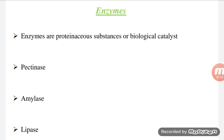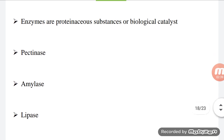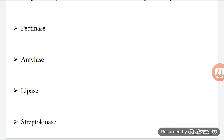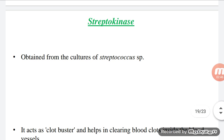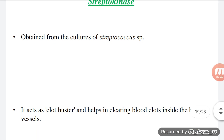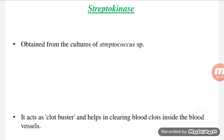Along with acids, microbes also produce certain enzymes, and these enzymes are protein in nature. The term 'enzyme' was coined by Kühne. Some enzymes produced by microbes include pectinase, amylase, lipase, cellulase, chitinase, and streptokinase.